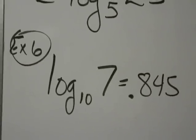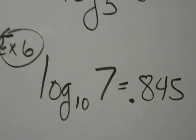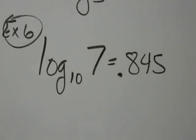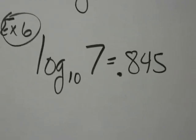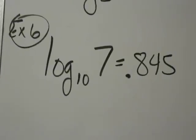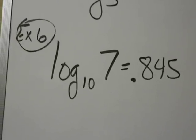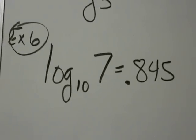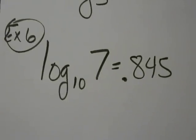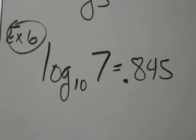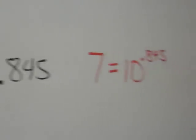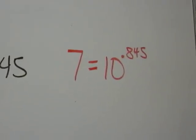Who's the Y? Oh, the 7. So if I need to take this and turn it into Y equals B to the X power, it's going to be Y equals? Oh yeah, 7 equals B to the X. Who's the B? Oh, the 10 raised to what power? Yeah. Good job.